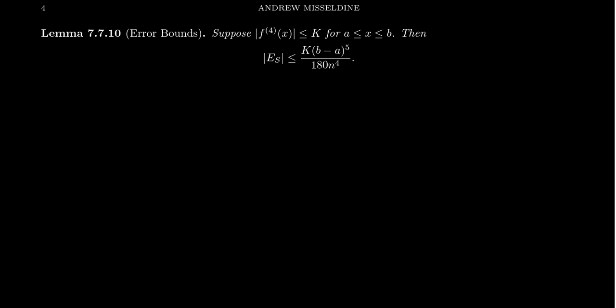Now with the trapezoid rule, we had a 12 on the bottom. With the midpoint rule, we have 24 on the bottom. With Simpson's, we have a 180. Don't worry too much where these numbers come from. It does come from a mathematical proof that we're not going to go into right now. But you're going to have a 180 in the bottom, which is really, really good.